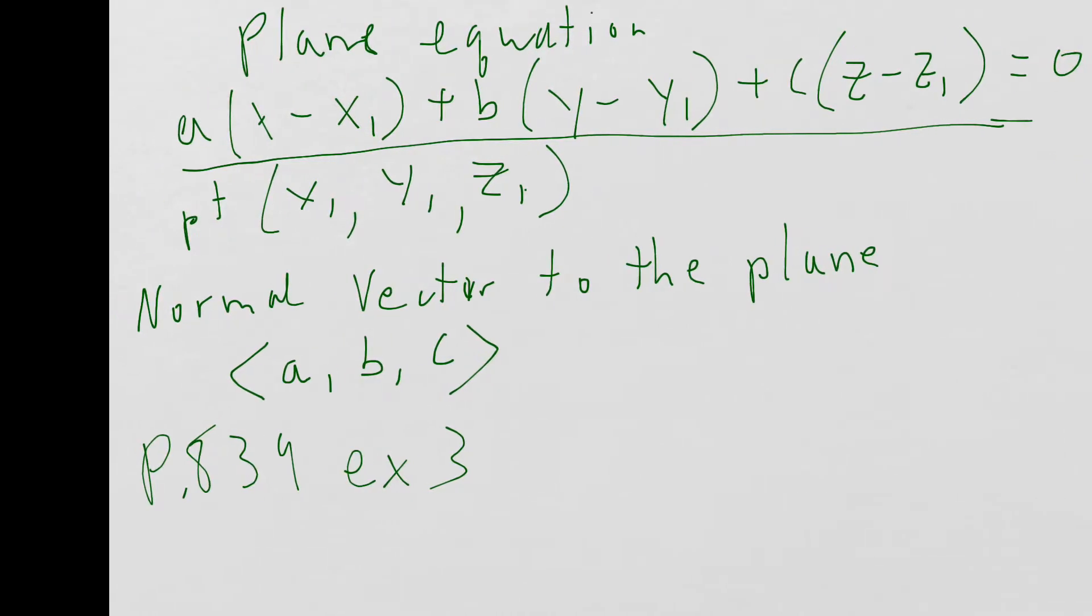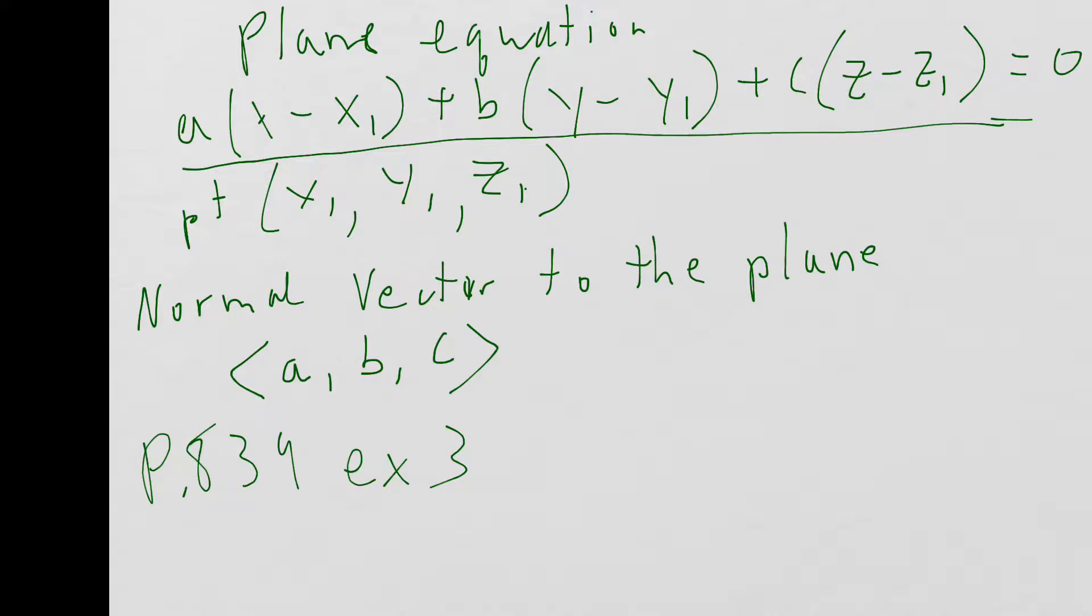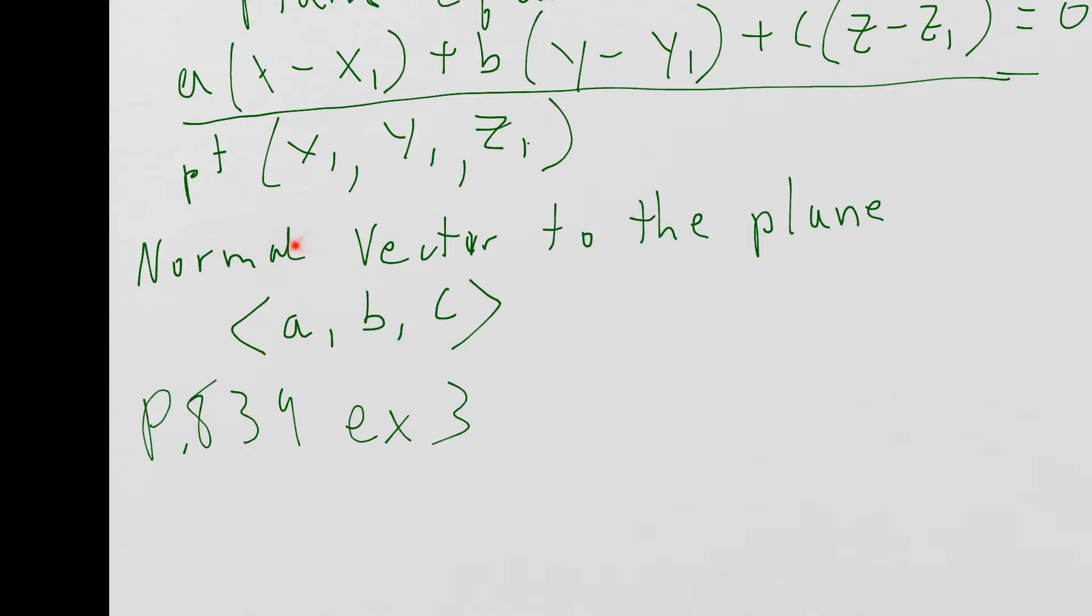So we have 0 over here. You're going to get x, y, and z, the x1, y1, z1 from a point. And you're going to get the A, B, C from what's called a normal vector.